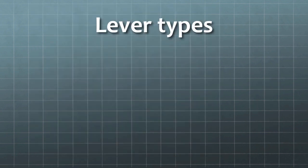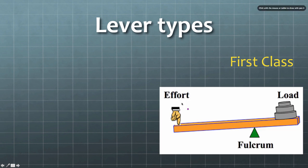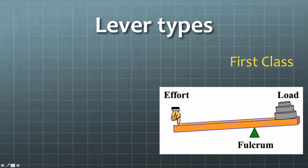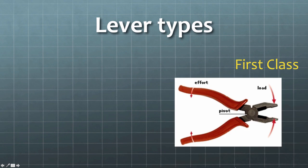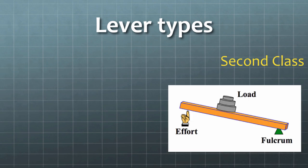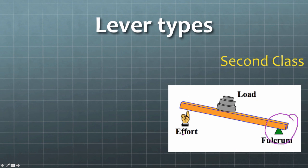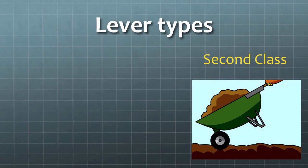Now we're going to talk about types of levers: first, second, and third class. A first-class lever has the fulcrum as the pivot point in the middle, the load on one side, and effort on the other. Examples include pliers, scissors, and a shovel. A second-class lever has the fulcrum at the end, the effort where you push up, and the load in the middle — a wheelbarrow is a second-class lever.